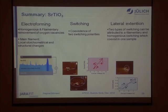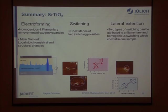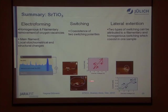This leads us to the following picture for strontium titanate devices: during electroforming, we have both a homogeneous and a filamentary process, and in the region of the main filament we get stoichiometric and morphological changes. We also have two switching polarities in one and the same device — we assign the counter-8-wise polarity to the filament switching type, and the 8-wise polarity to a more homogeneous type of resistive switching.